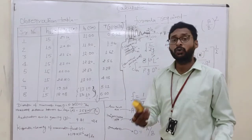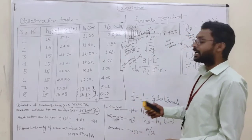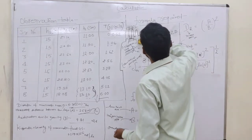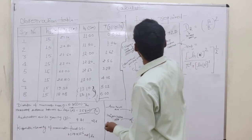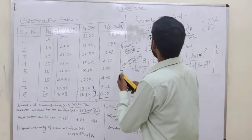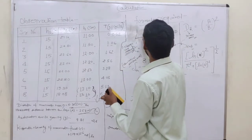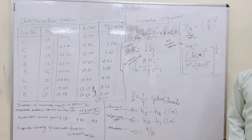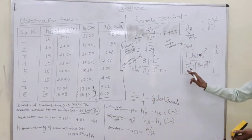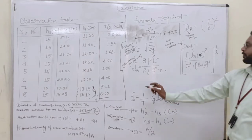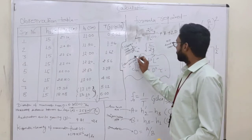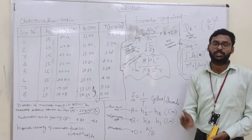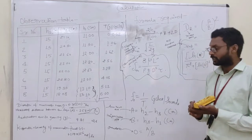Now let us see how to do the calculations — how we can find out the theoretical damping coefficient and the experimental damping coefficient. Here are the equations required to find out the theoretical damping coefficient. Let us now see what the terminologies in the equation are. First, we are going to look at the theoretical damping coefficient.